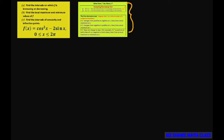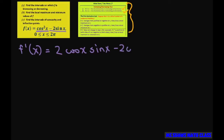In order to find where the intervals on which f is increasing or decreasing, we need to take the first derivative and see where it's positive and where it's negative. If it's positive, it's increasing, and if it's negative, it's decreasing. So when you take the derivative, f prime of x, we use the chain rule on that. That's going to be 2 cosine of x times the derivative of cosine of x, which is sine of x. And then take the derivative of negative 2 sine of x, which is negative 2 cosine of x.